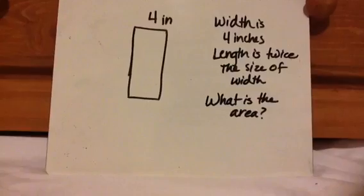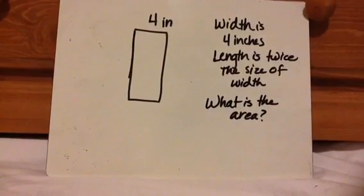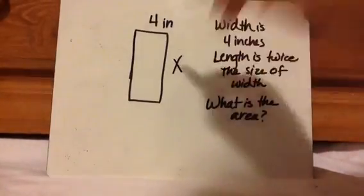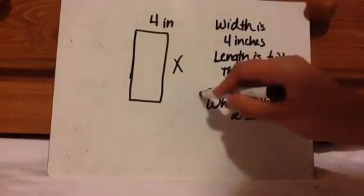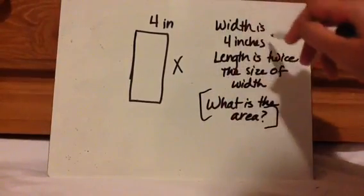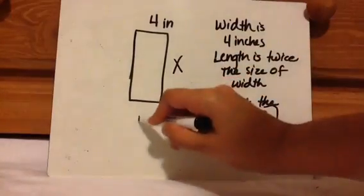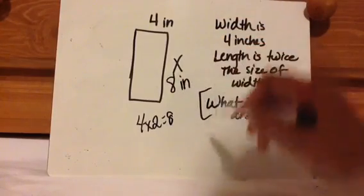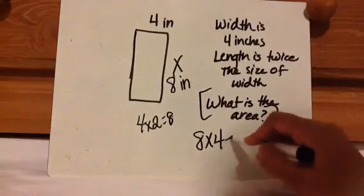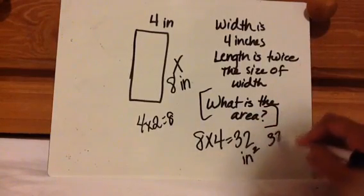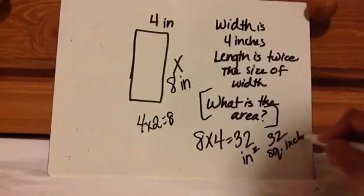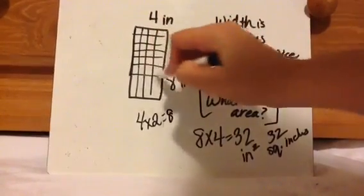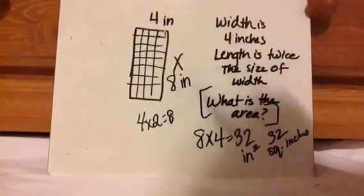Let's look at this question. The width is four inches and the length is twice the size of the width. What is the area? There are two parts to this question. First, you have to figure out what the length is, then find the area. Width is four inches, length is twice the size of the width — twice means times two, so four times two equals eight. The length is eight inches. Now I need to do eight times four, and that equals 32 inches squared or 32 square inches.